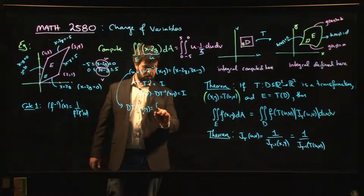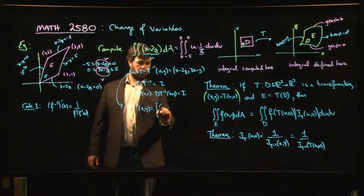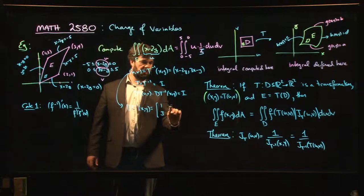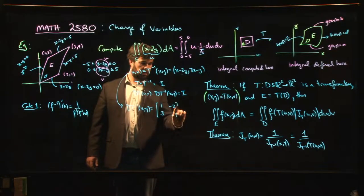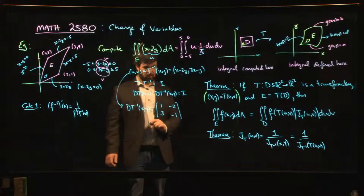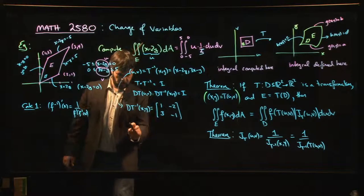It's going to be - so we do the x derivatives first: 1, 3. And we do the y derivatives: minus 2, minus 1. Okay, so the Jacobian...